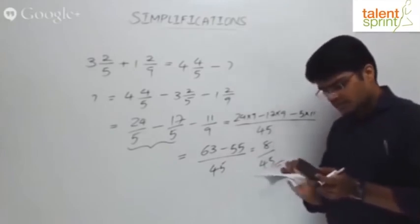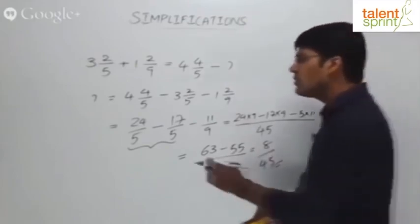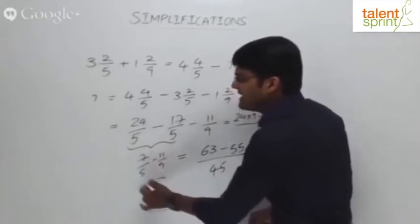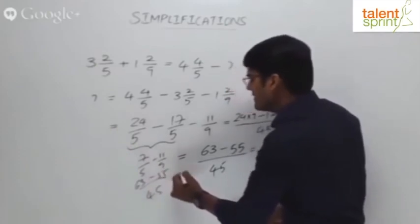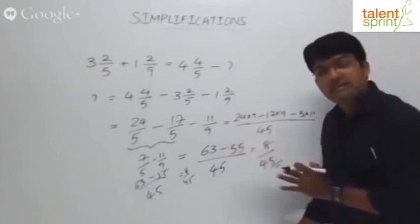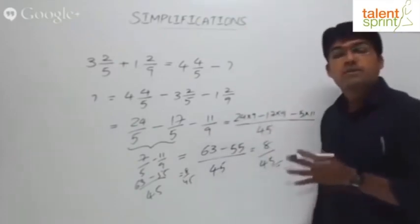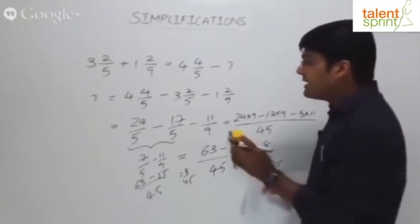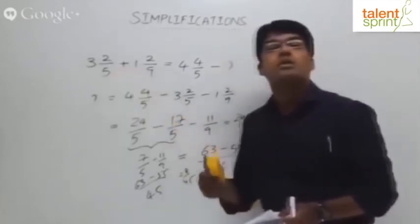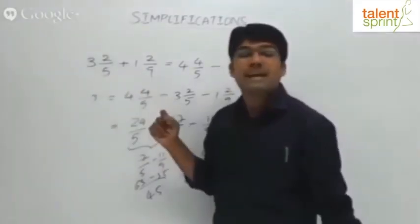8/45 is option number 1. But this is a lengthy procedure. Even taking a shortcut, you still have 7/5 minus 11/9, and need to find LCM 45 again — 9 times 63, 5 times 55 — giving 8/45. We waste a lot of time in this process. So what is the smart way? Never try to convert the mixed fraction into an improper fraction.